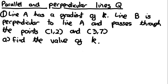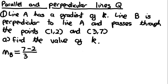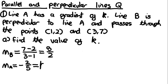For part A, we need to find the value of K, which is the gradient of line A. We're told line B is perpendicular to line A, and we're given two points on line B, so we can find its gradient: (7 minus 2) over (3 minus 1) equals 5/2. Since line B is perpendicular to line A, the gradient of line A is the negative reciprocal of 5/2, which is minus 2/5. Therefore K equals minus 2/5.